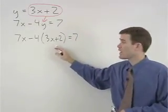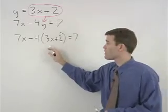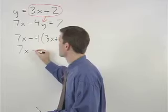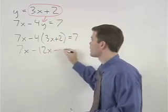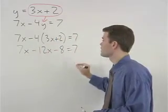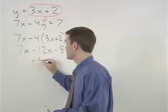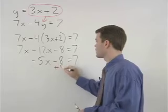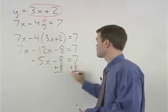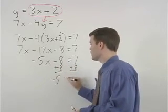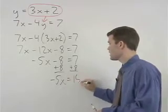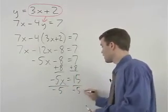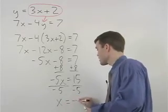Now we can solve for x. If we simplify on the left side, we get 7x minus 12x minus 8 equals 7, which simplifies to negative 5x minus 8 equals 7. Add 8 to both sides and negative 5x equals 15. Divide both sides by negative 5 and x equals negative 3.